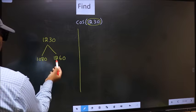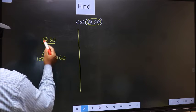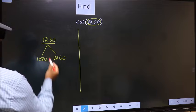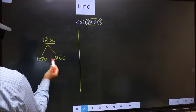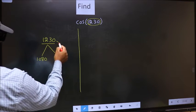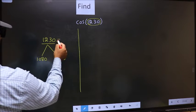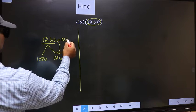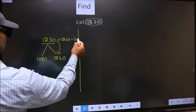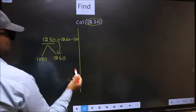Between these two numbers, 1230 lies. Next, 1230 is close to which number? This is close to 1260. So this now should be written as 1260 minus 30. So this will become cos.